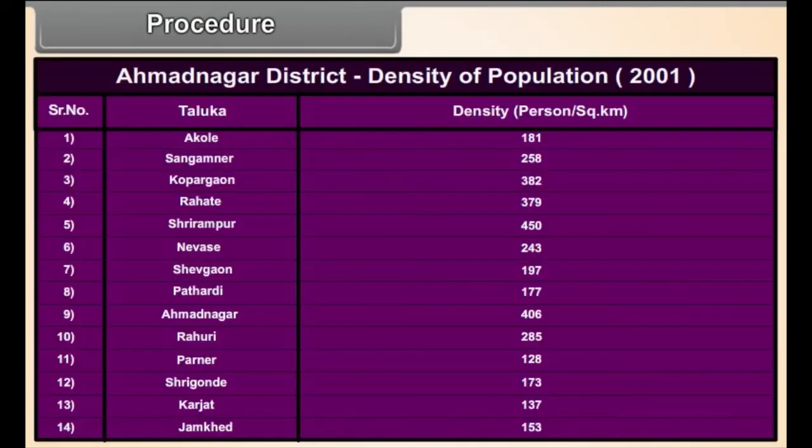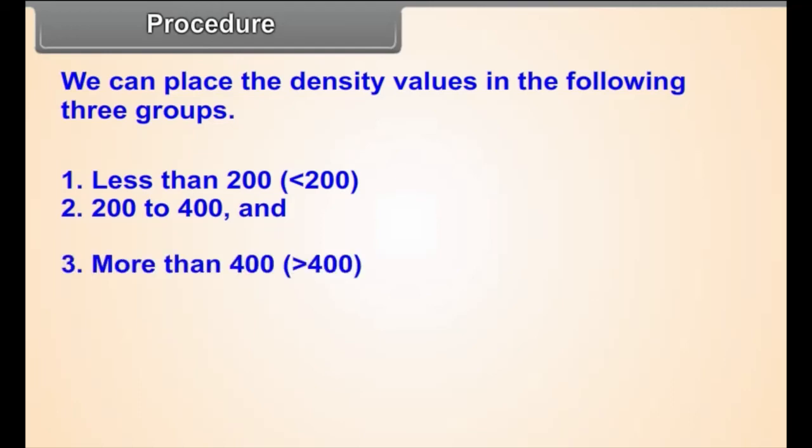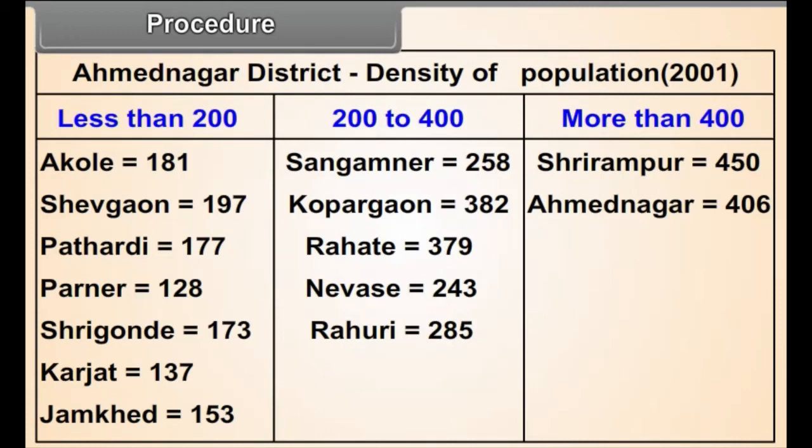Procedure. Consider the density of population of the different Talukas in Ahmadnagar district. Find the maximum and minimum values of the density of population. We can place the density values in the following three groups: 1. Less than 200. 2. 200 to 400. 3. More than 400. Check the density of population of the Talukas in the table alongside. Find the Talukas that belong to the groups we have identified.